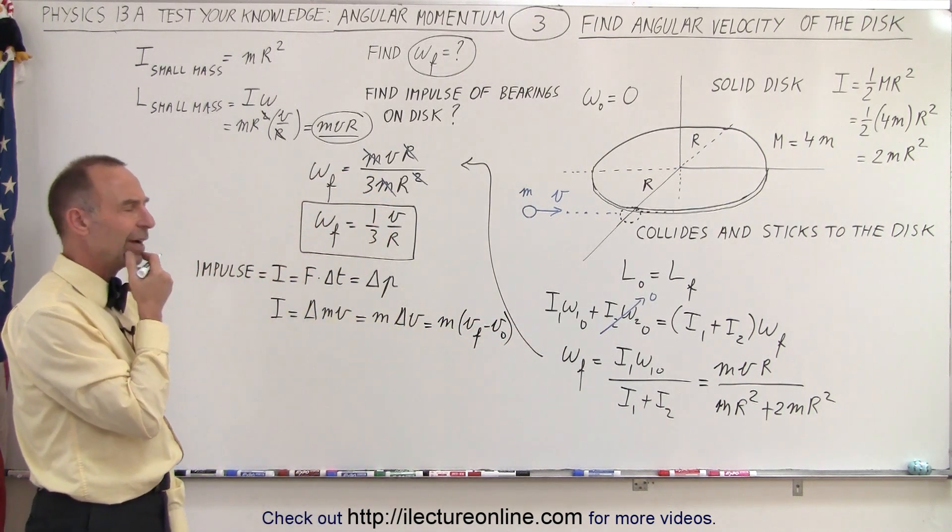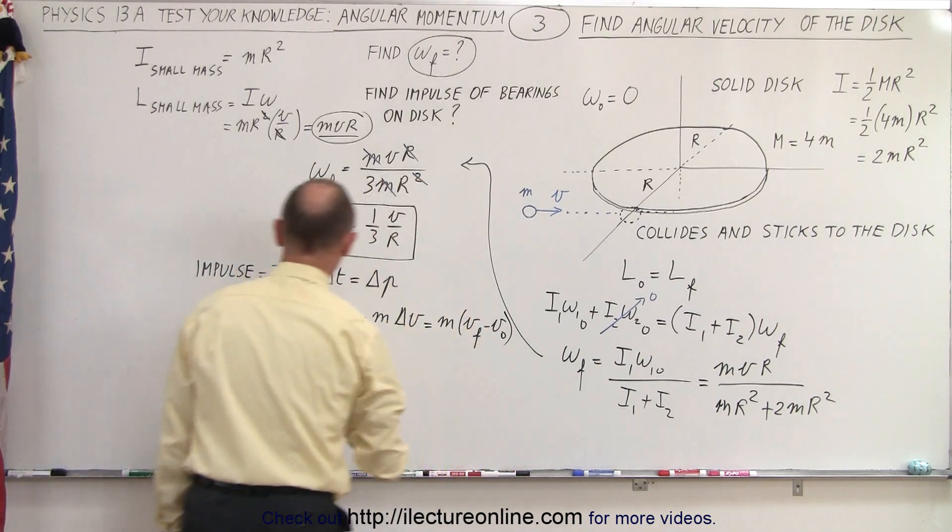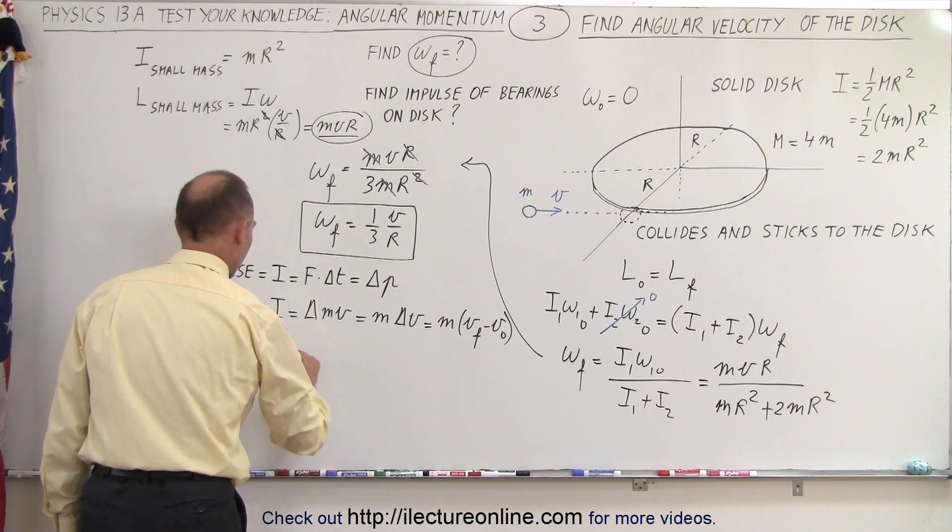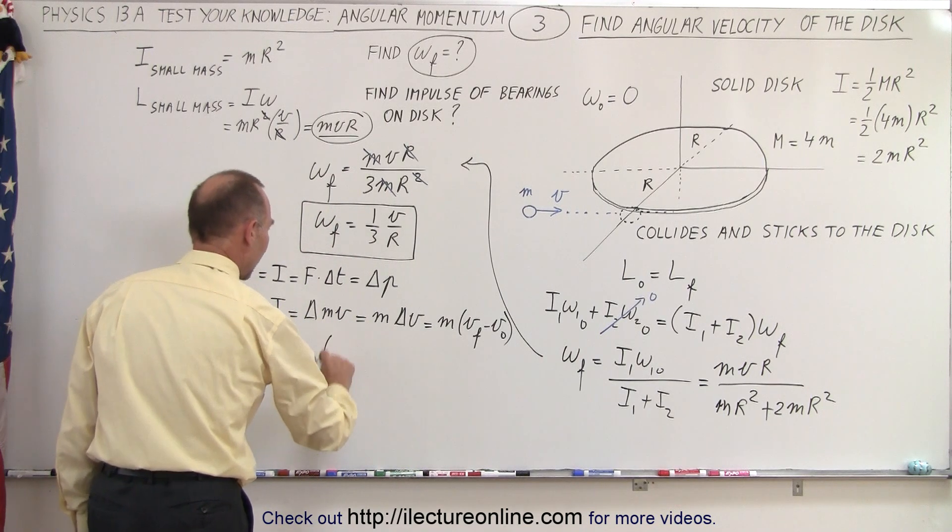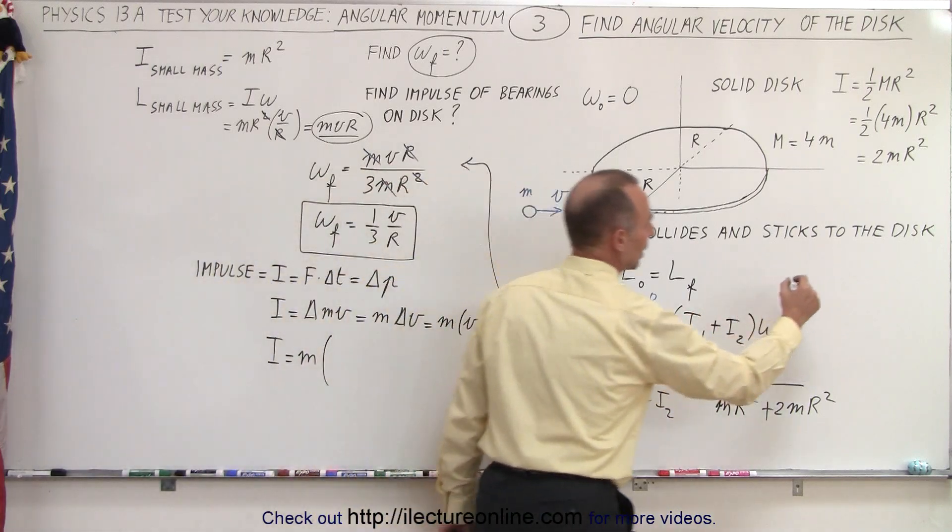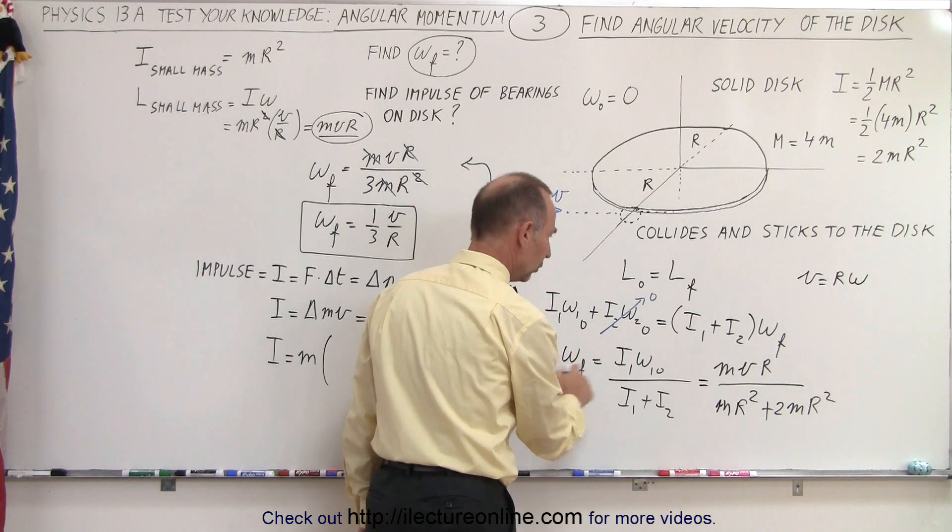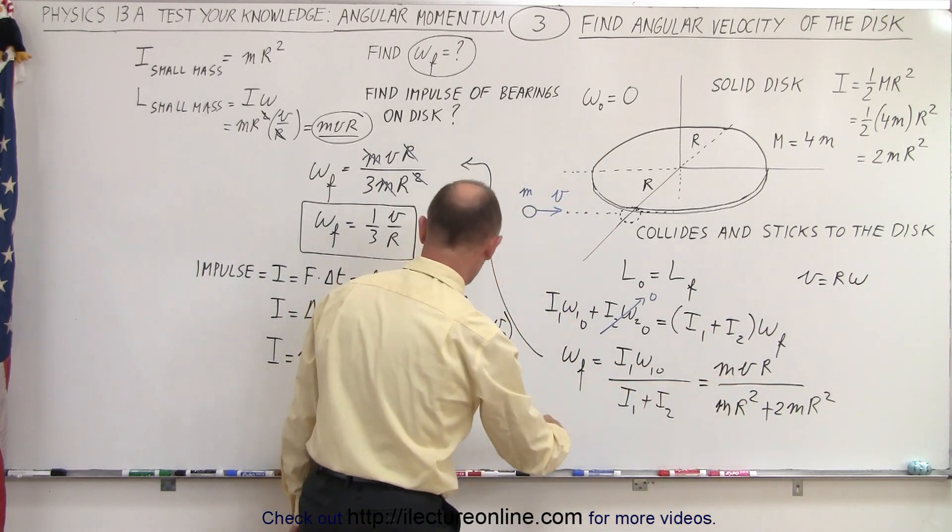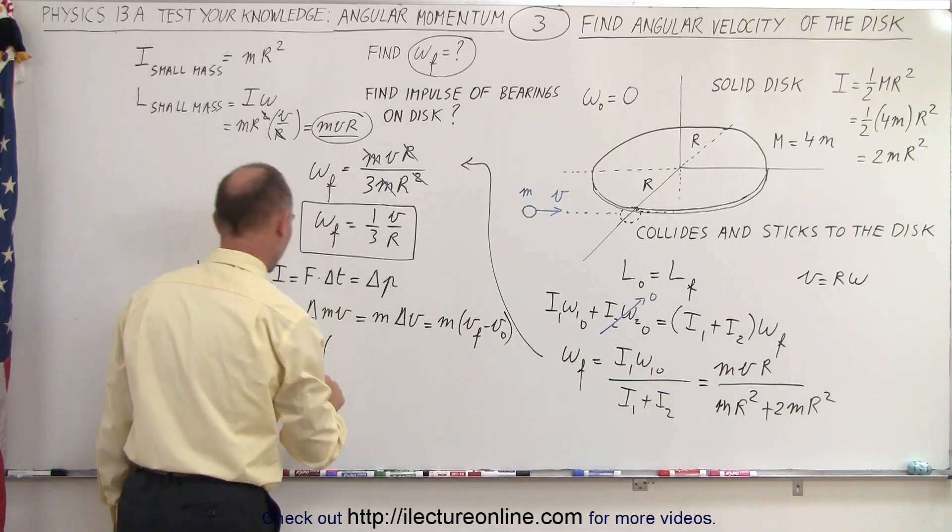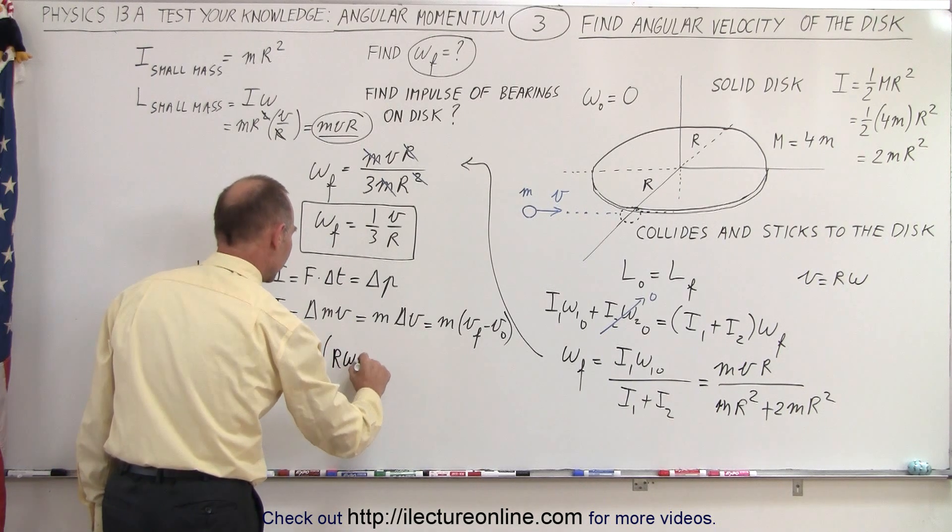So now we need to find the final v. Now the final v is going to depend on the final ω. So in this case, we have impulse equals the mass times the final v. And remember that v equals r times ω, and ω is known—ω equals this. So m will be r times ω_final.